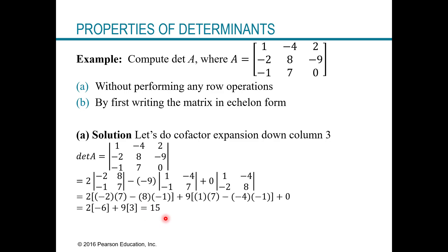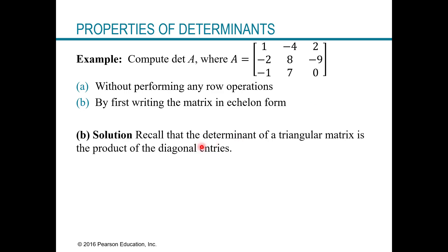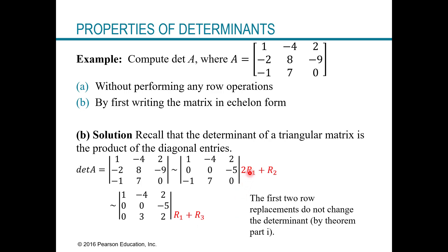Now we're going to do the same thing a second way and should still get 15, but we'll reduce the matrix to echelon form first. Remember, if we're in echelon form we have a triangular matrix and finding the determinant is really quick — it's just the product of the diagonal entries. We need to remember the theorem we just learned, because certain row operations can change the sign or value of the determinant. So let's add two times row one to row two to get a new row two, and add rows one and three to get a new row three. According to our theorem, this doesn't change the determinant at all.